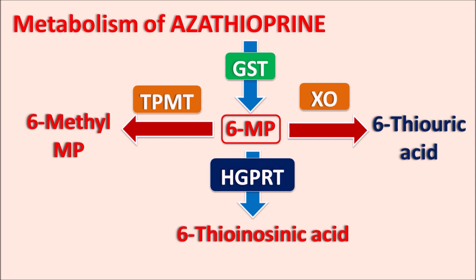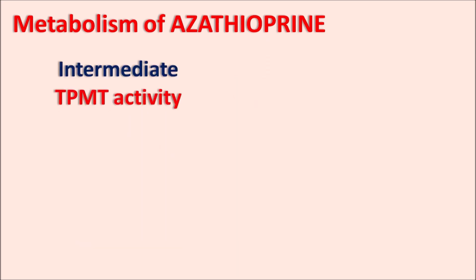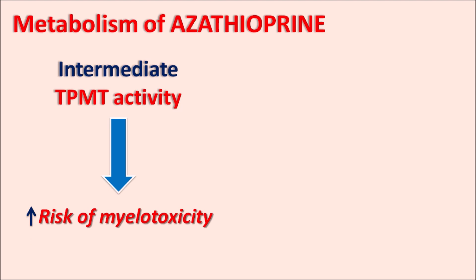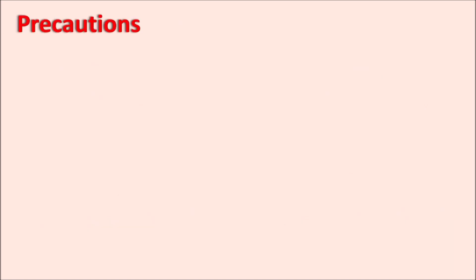TPMT shows genetic variation, and in some patients its activity may be low, leading to reduced metabolism of azathioprine. Before administering azathioprine, the TPMT phenotype should be assessed to determine the appropriate dose. Patients with intermediate TPMT activity have reduced metabolism and increased risk of myelotoxicity, while patients with low TPMT activity face severe, life-threatening myelotoxicity and potentially severe bone marrow depression.